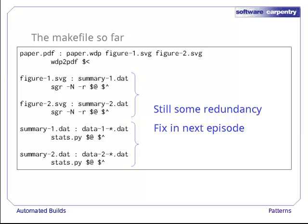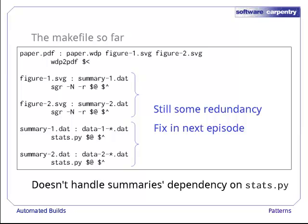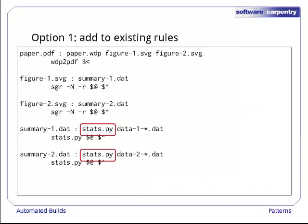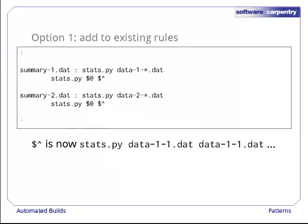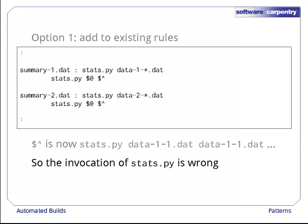Before then, though, we have one more problem to address. Our existing makefile doesn't capture the fact that summary1.dat and summary2.dat depend on stats.py, as well as on their corresponding raw data files. We could try to fix this by adding stats.py to their prerequisite lists. If we do this, though, stats.py will appear in the value of the automatic variable $^ for those two rules.